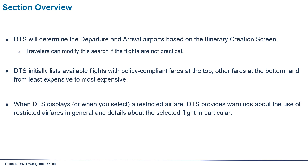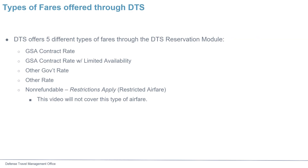Flights are listed from least expensive to most expensive. When DTS displays or when you select a restricted airfare, DTS provides warnings about the use of restricted airfares in general and details about the selected flight in particular. DTS offers five different types of fares through the DTS reservation module: GSA Contract Rate, GSA Contract Rate with Limited Availability, Other Government Rate, Other Rate, and Non-refundable Restricted Airfare. This video will not cover restricted airfare.